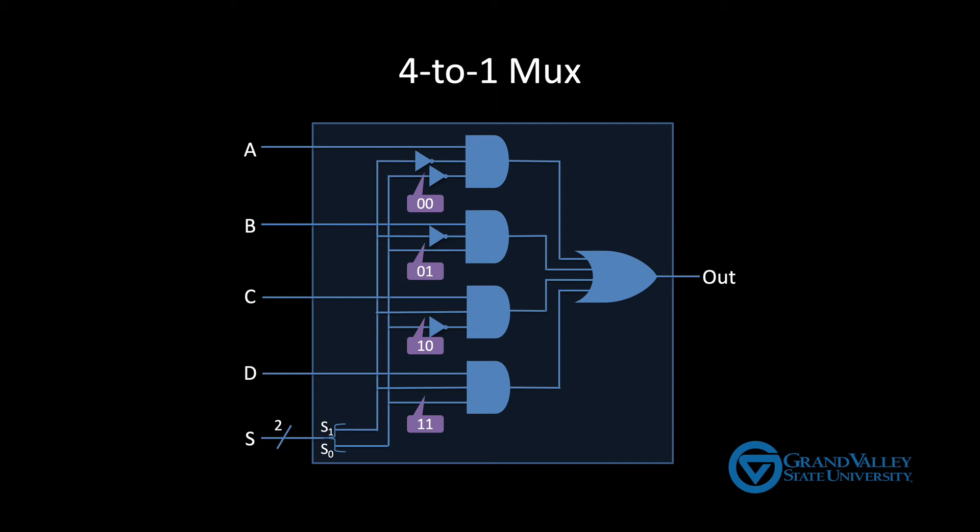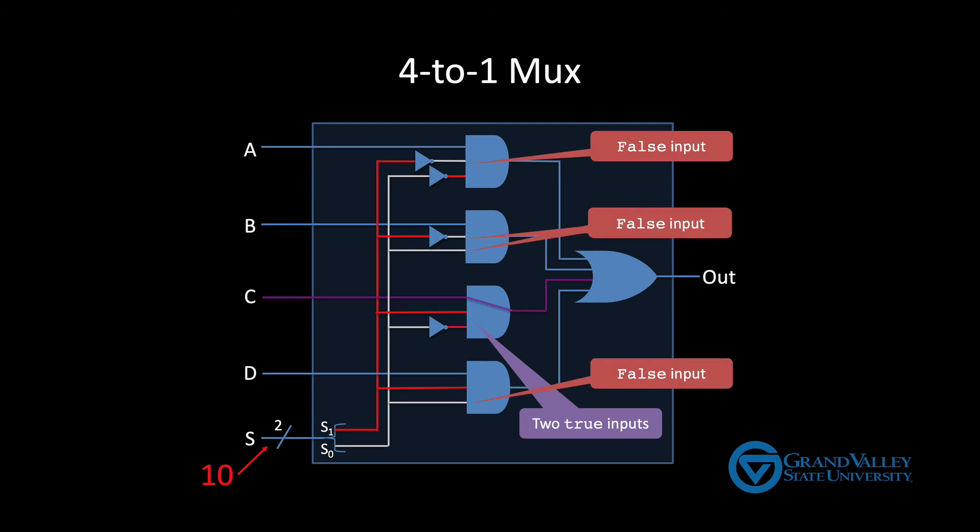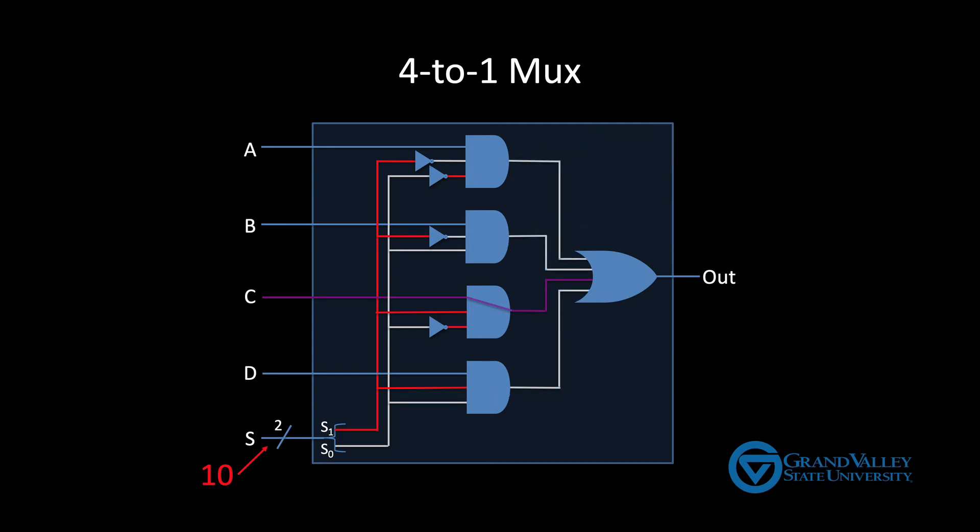Let's examine a specific example. Suppose we put one zero on the selector. The AND gate for input C will have two ones as input, allowing it to pass input C through to the OR gate. The other three gates have at least one zero input, which means that they all will send zeros onto the OR gate. As a result, the OR gate passes input three through to the output.